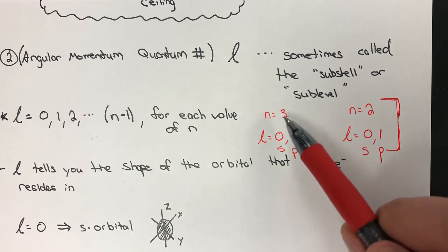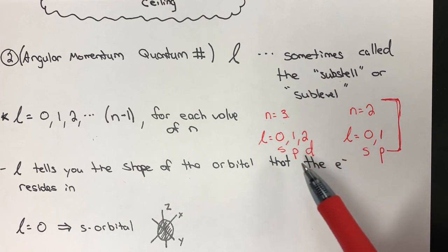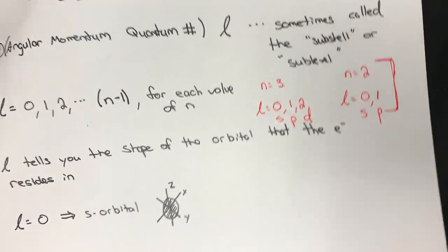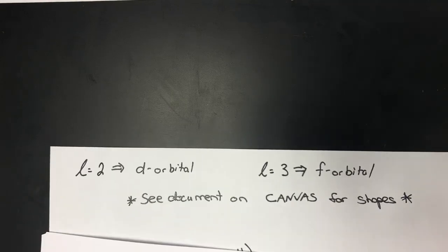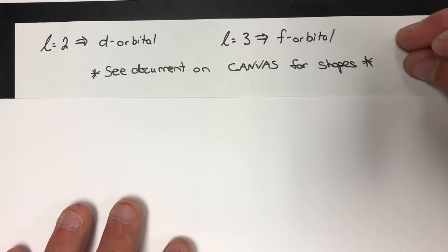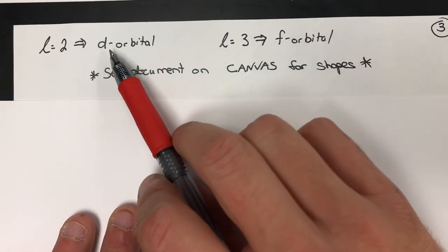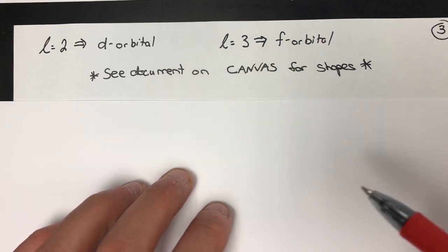As n increases, we start to add more orbitals. Eventually, as we get to L equals three, we see the introduction of f type orbitals. So L equals two gives us d type orbitals, and L equals three gives us f type orbitals.